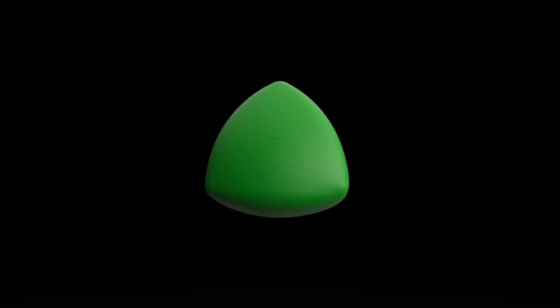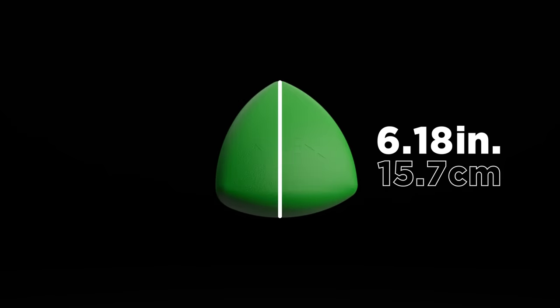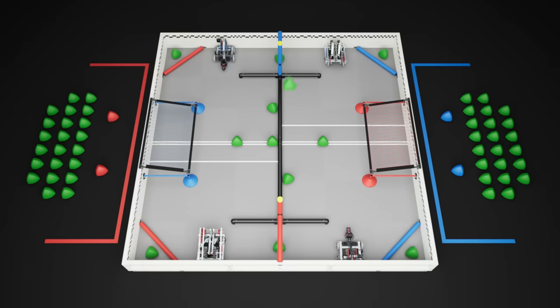The primary game objects in VRC Over Under are plastic, acorn-shaped tri-balls with a primary dimension of just over six inches. There are 60 tri-balls total in an Over Under match: one preload per robot, 12 on the field, and 22 match loads per alliance.